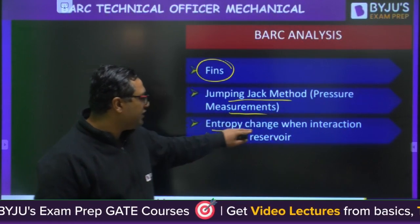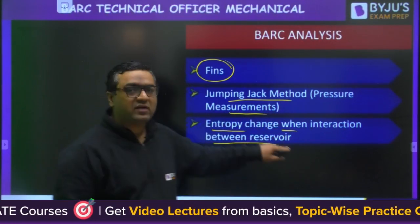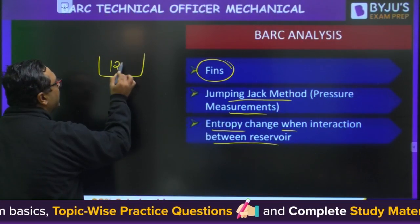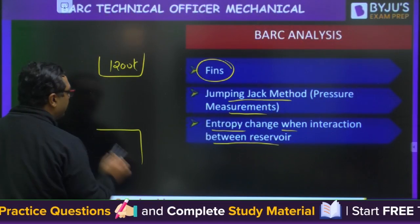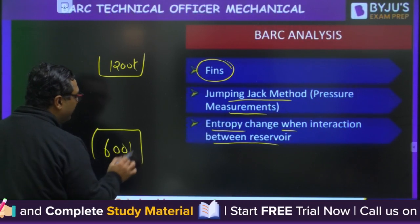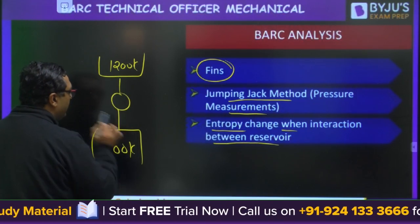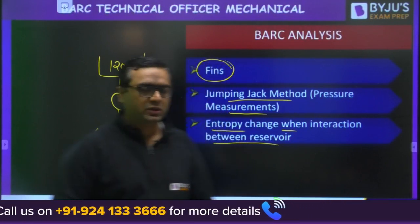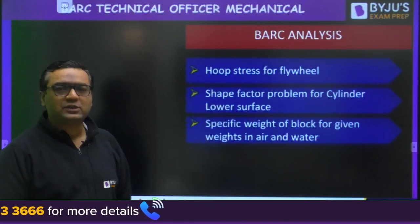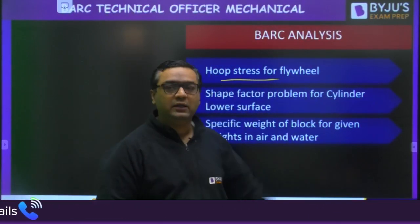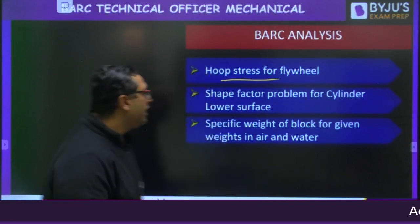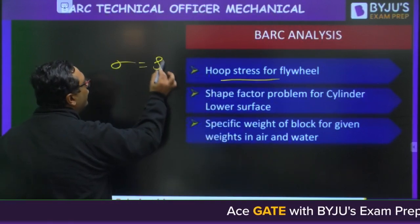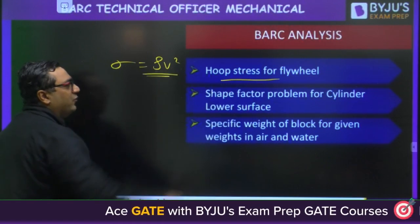The jumping jack method appeared in pressure measurement. There was also a question on entropy change when interaction between reservoirs occurs — for example, one reservoir at 1200 K and another at 600 K — and they asked about the entropy change in that scenario.